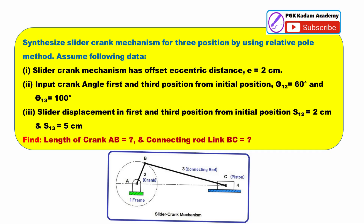Assume the following data. The slider-crank mechanism has an offset eccentric distance E equal to 2 cm. The input crank angle for the first and second position from the initial position: θ₁₂ equal to 60 degrees, and θ₁₃ equal to 100 degrees. Slider displacement in the first and second position from the initial position: S₁₂ equal to 2 cm, and S₁₃ equal to 5 cm.